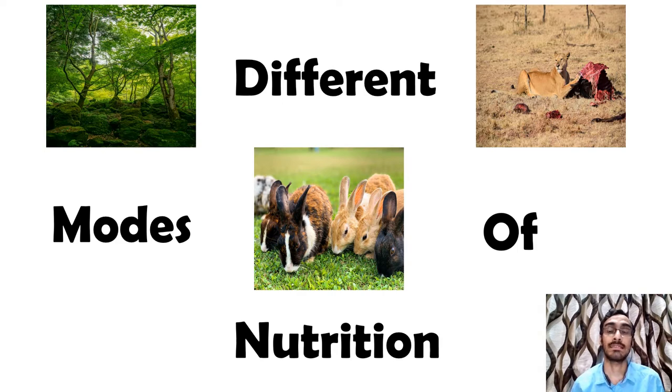As we all can see in this slide, there are three different images. The first one is of a plant, second one is of rabbits, and the third one is of a lion. The way of obtaining food for all these three organisms is different.